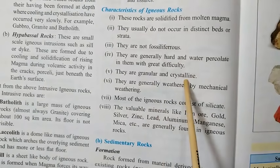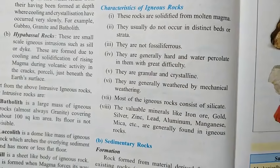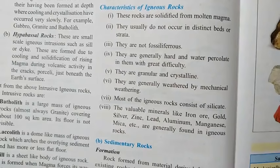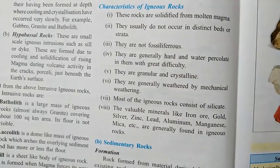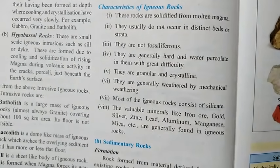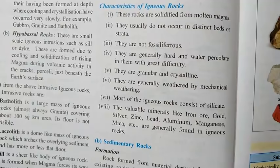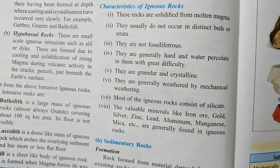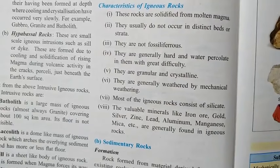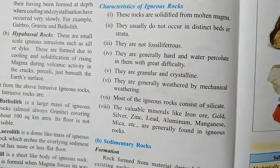Sixth, igneous rocks are generally weathered by mechanical weathering — meaning they can be weathered by agents such as wind or running water. This mechanical process of weathering will be studied in detail later.